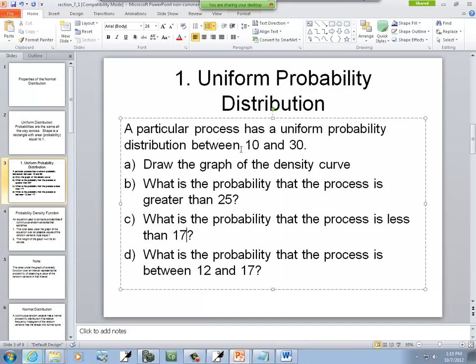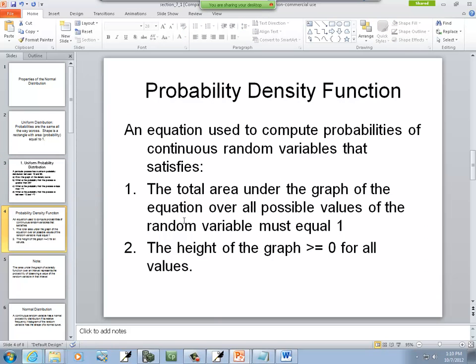And those are going to be our answers for the uniform distribution. Not a hard problem, usually. Now, just in general, talk about probability density functions. This is an equation used to compute probabilities of continuous random variables that satisfies, and this just kind of makes sense with what we've already been talking about. A total area under the graph of the equation over all possible values of the random variable must equal 1. Total area is 1.